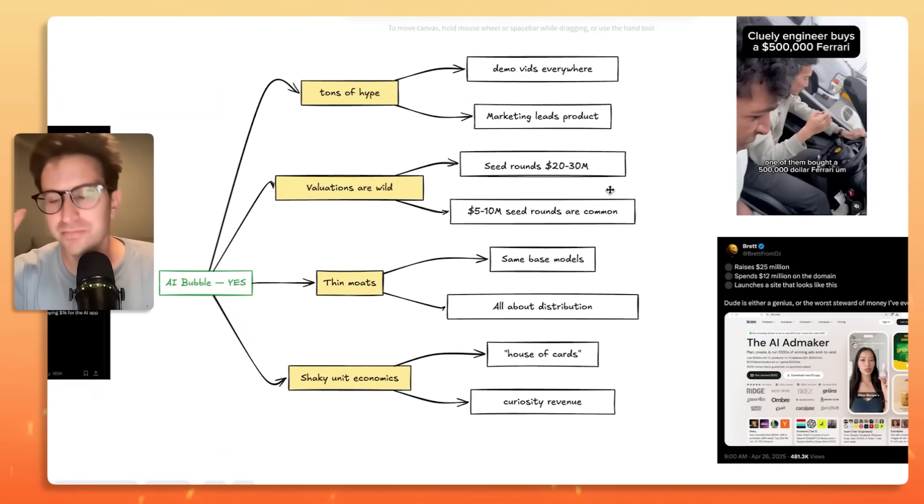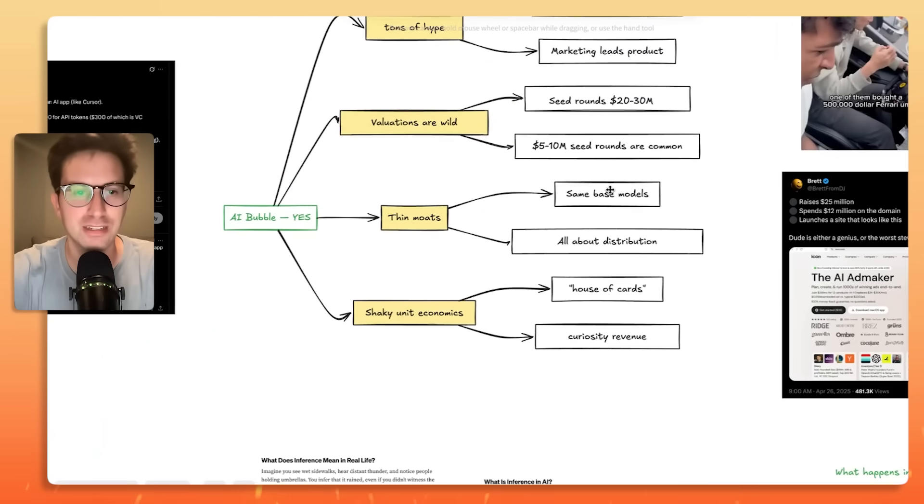Now, these are the main reasons why people say it might be an AI bubble. And I think when people see stories like icon.com raising $25 million and then spending $12 million on the domain, it just exacerbates it. So I can understand why people say it's an AI bubble. I'll let you, the listener, the watcher, decide for yourself, is it an AI bubble? Yes or no? Let me know in the comment section.